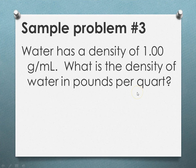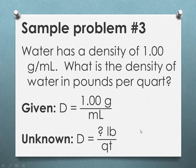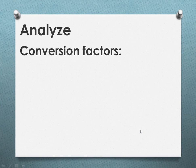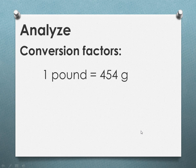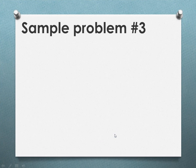Sample problem three. Water has a density of 1.00 grams per milliliter. What is this density expressed in pounds per quart? So we're going from density in grams per milliliter to pounds per quart. So the given and the unknown. Now, analyze the conversion factors we're going to need. One pound is equivalent to 454 grams. One quart is 0.946 liters. And one liter is 1,000 milliliters.